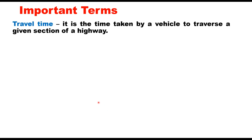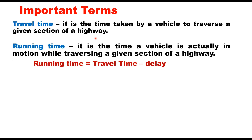Before we go to methods of travel time and delay studies, there are certain important terms to understand. Travel time is the time taken by a vehicle to traverse a given section of a highway — the time to travel from point A to point B. Running time, on the other hand, is the time a vehicle is actually in motion while traversing a given section. Therefore, running time is travel time minus delay — running time does not include delay, whereas travel time is the total time spent on the road.